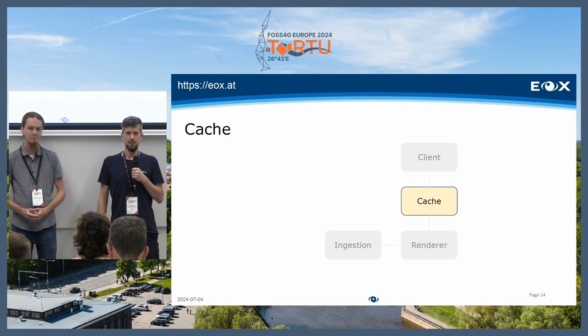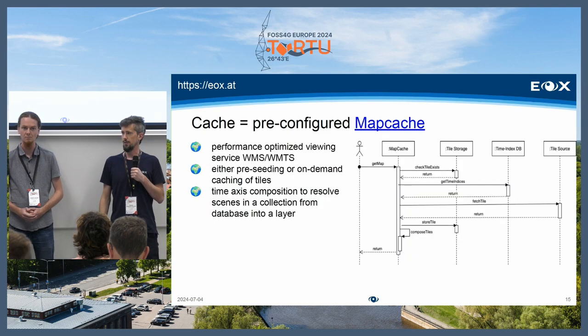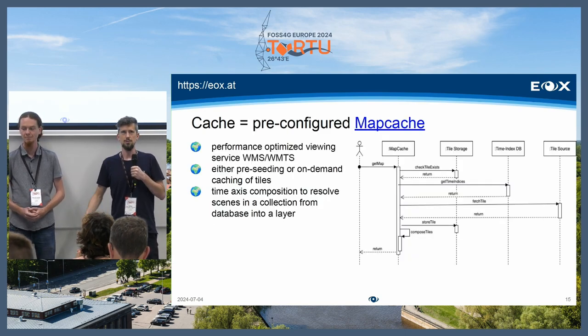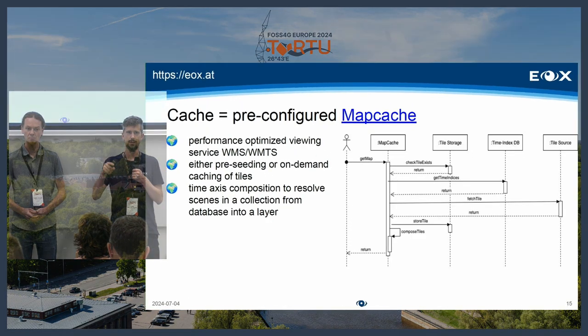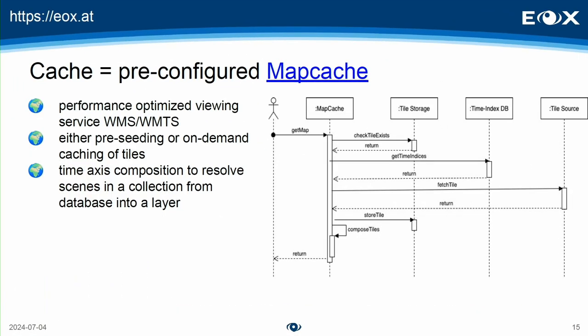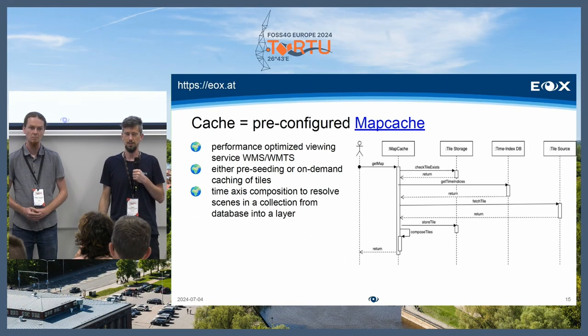The next component is the cache, which is based on the popular MapCache library — it does all the heavy-duty work. We make use of a time index database where we know which time indices are available. We query that for better caching so we know which tiles a request is targeting and can combine them back to a single result. We pre-configure it — we don't change anything about MapCache itself, it's a good piece of software.